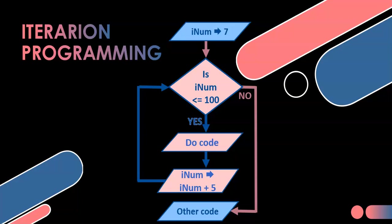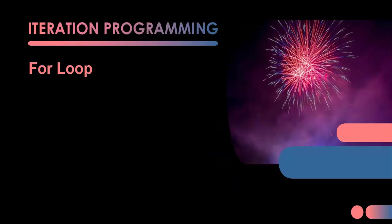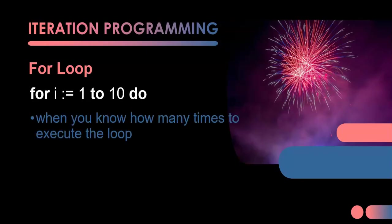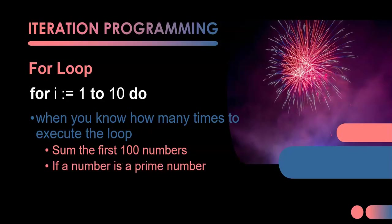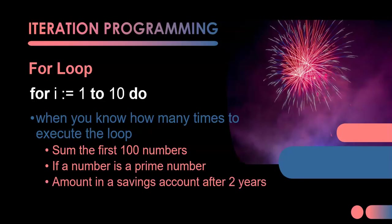We can repeatedly do a section of code based on some sort of criteria. When we did for loops, the structure was 'for i equal 1 to 10.' We use for loops when you know exactly how many times you're going to execute the loop. For example, summing the first 100 numbers, finding prime factors, or calculating savings over two years with a monthly calculation — that's 24 times. When you know exactly how many times to do the loop, use a for loop.